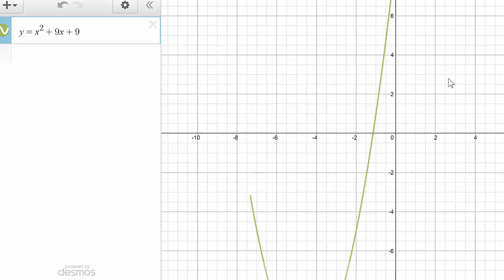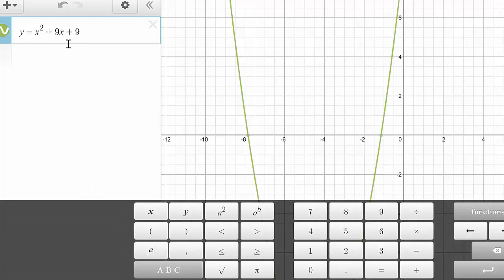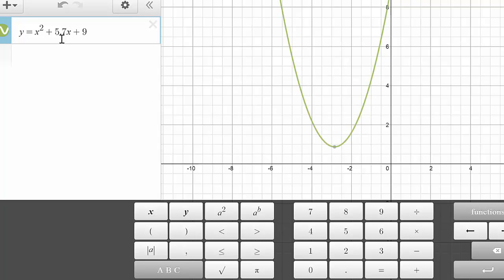But, if I start to, I'm going to move my graph. Yeah, anything bigger than six, I'm going to have two x-intercepts. If it's less than six, notice I have no x-intercepts. I can change that number, get closer and closer to six, I get closer and closer to the x-axis.